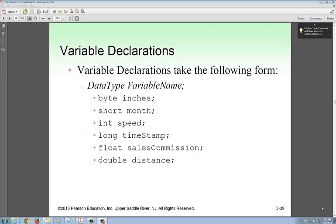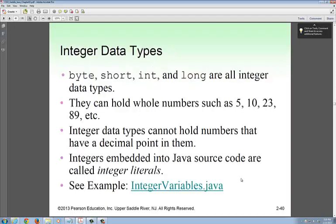This is chapter 2 part C. I'm going to talk to you about the different data types and how to declare them. If you look here, there's byte, short, int,